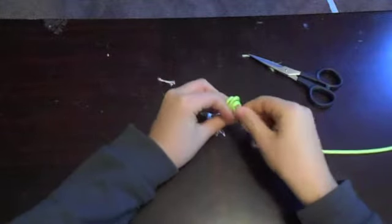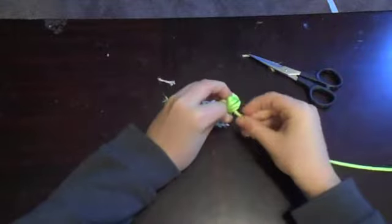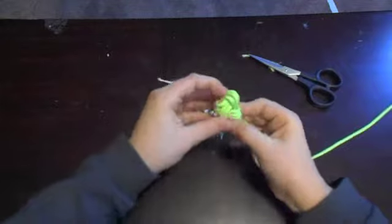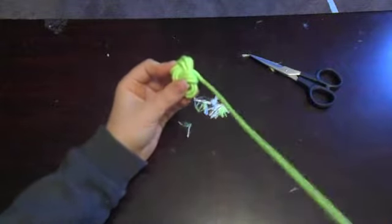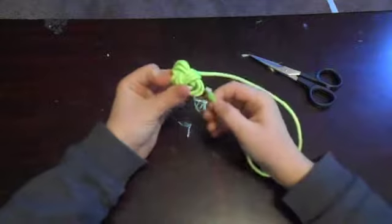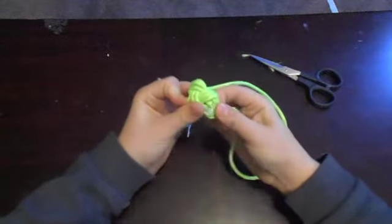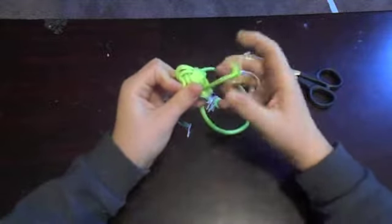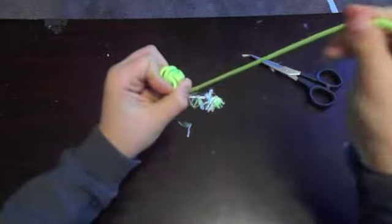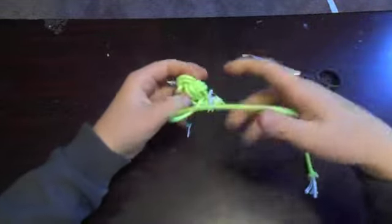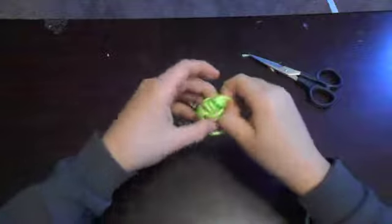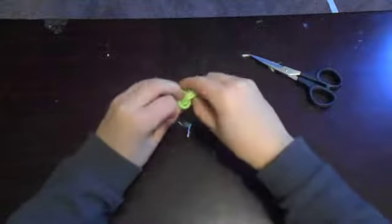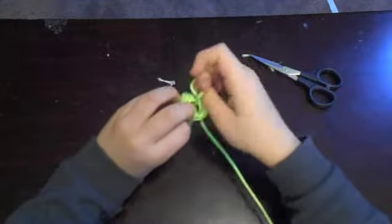Push your paracord through again. You might want to make your holes a little bigger than mine—I made it too small on accident, and that just makes it even harder to use. Okay, pull it through.